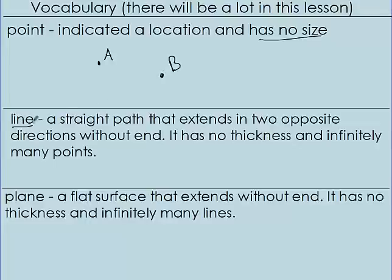What's a line? A line is a straight path that extends in two opposite directions without end. It has no thickness and infinitely many points.